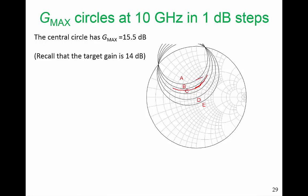We would like these circles to intersect the NFmin circles. We're going to pick an optimum noise figure and optimum gain. And hopefully everything is simultaneously met while still being outside those stability circles, still being in the stable region.